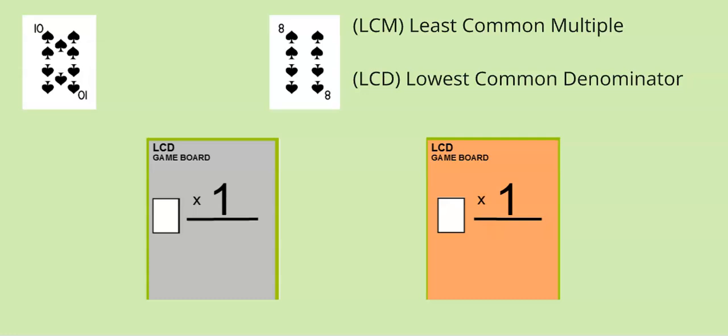Another example would be if the dealer had a 10 and an eight. The least common multiple, or what the common denominator would be, would be 40. You'd have to know you multiplied it by four, and this one you would multiply by five. So the students would have to get this answer the quickest. That's how you play that game.